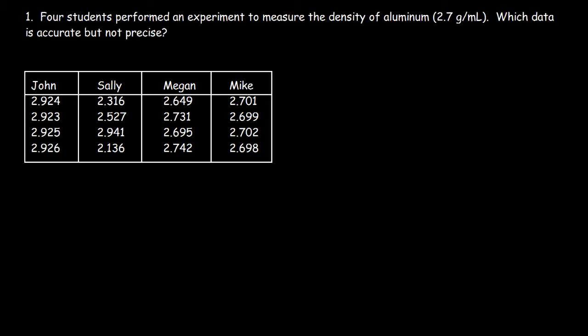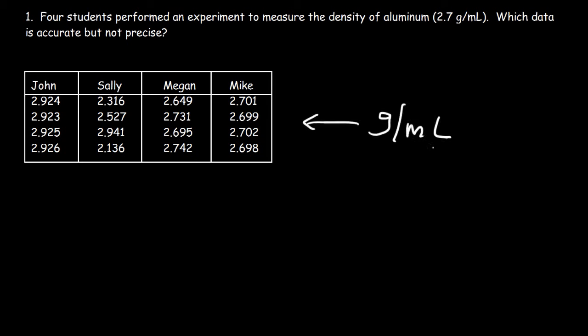Let's try a problem to see the difference between accuracy and precision. Four students performed an experiment to measure the density of aluminum, and the accepted value is 2.7 grams per milliliter. Assuming the data all represents the same units, which data is accurate but not precise?